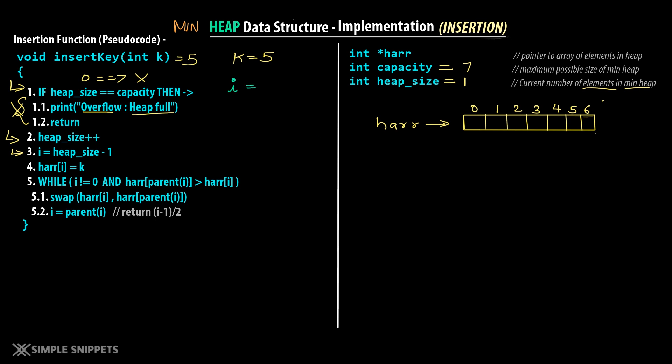This while loop keeps checking from bottom to top whether the min heap property is followed. If it is followed, we leave the loop; if not, we do the swapping. Since i has become 0 and the while loop only executes when i is not equal to 0, we stop and the insertion is done properly. In the array, 4 is now at position 0 and 5 is at position 2 after the swapping — this is now a proper min heap.